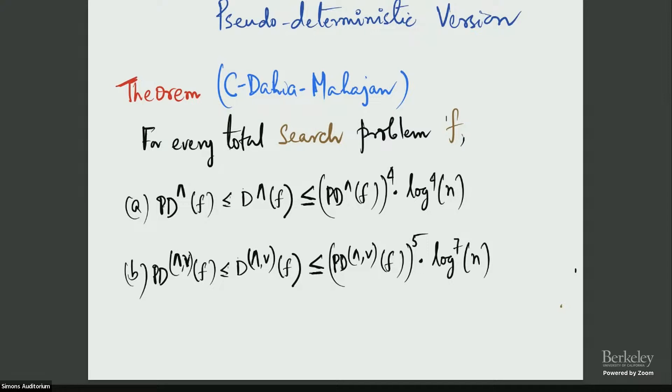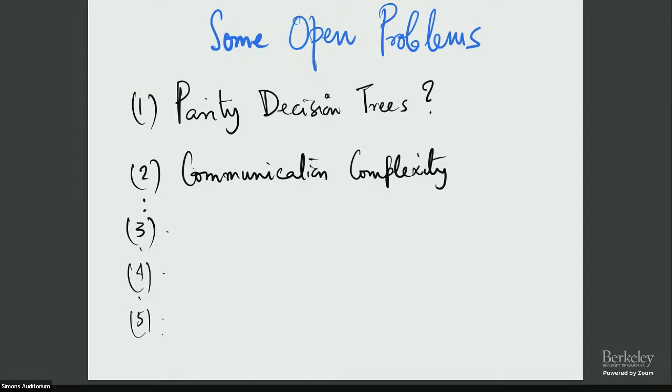And there are many open problems. Some of the open problems, my favorite one is parity decision trees, because this is the first model where randomness and determinism are different, the easiest model. Yet, it seems very hard. Maybe we are being dumb, but we have no idea. Well, communication complexity seems a little farther because if we can't show it for parity decision trees, then communication complexity is more difficult. And there are many other problems I can talk about if you're interested offline.